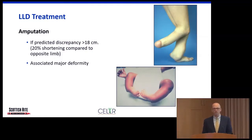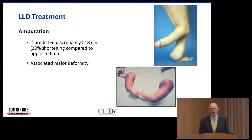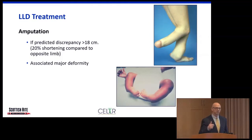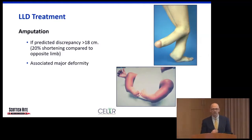Amputation is always part of lower extremity reconstruction conversations. When the discrepancy is 20 percent or more — north of fifteen to twenty centimeters — with associated deformities, amputation may be in the best functional interest of the child. All of our decisions, whether lengthening, shortening, or amputation, are made based on one question: what is in the best functional interest of this child, with the least amount of surgery, allowing them to keep their childhood as long as possible?